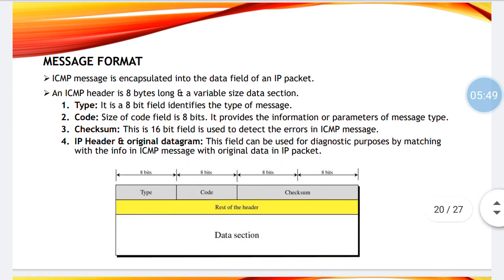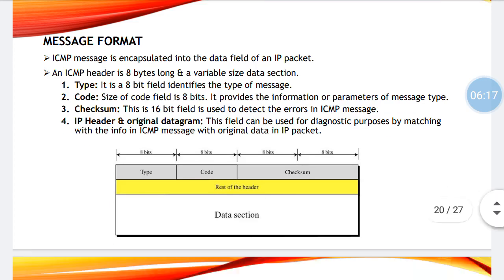Now the message format of the ICMP message — in case they are asking, you are supposed to draw this diagram. It consists of: type, for which 8 bits is allocated, which identifies the type of message; code, for which 8 bits is also allocated, which provides information about the type of message; and checksum, for which we have 16 bits, which detects errors in ICMP messages. The IP header and original datagram field can be used for diagnostic purposes by matching with the information in the ICMP message against the original data in the IP packet.